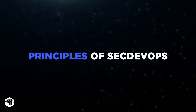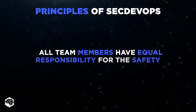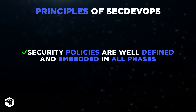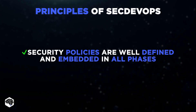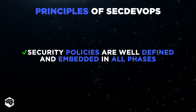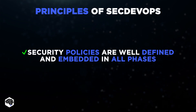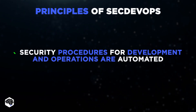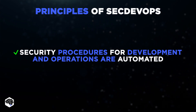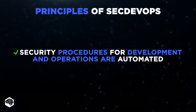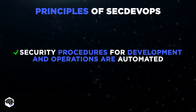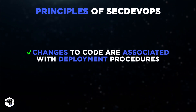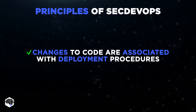SecDevOps follows key principles. Namely, all team members have equal responsibility for the safety. Security policies are well-defined and embedded in the planning, analysis, design, and deployment phases, besides the traditional implementation and testing phases. Security procedures for development and operations are automated where possible, including fixes for known vulnerabilities. And changes to application code are associated with deployment procedures and rules.